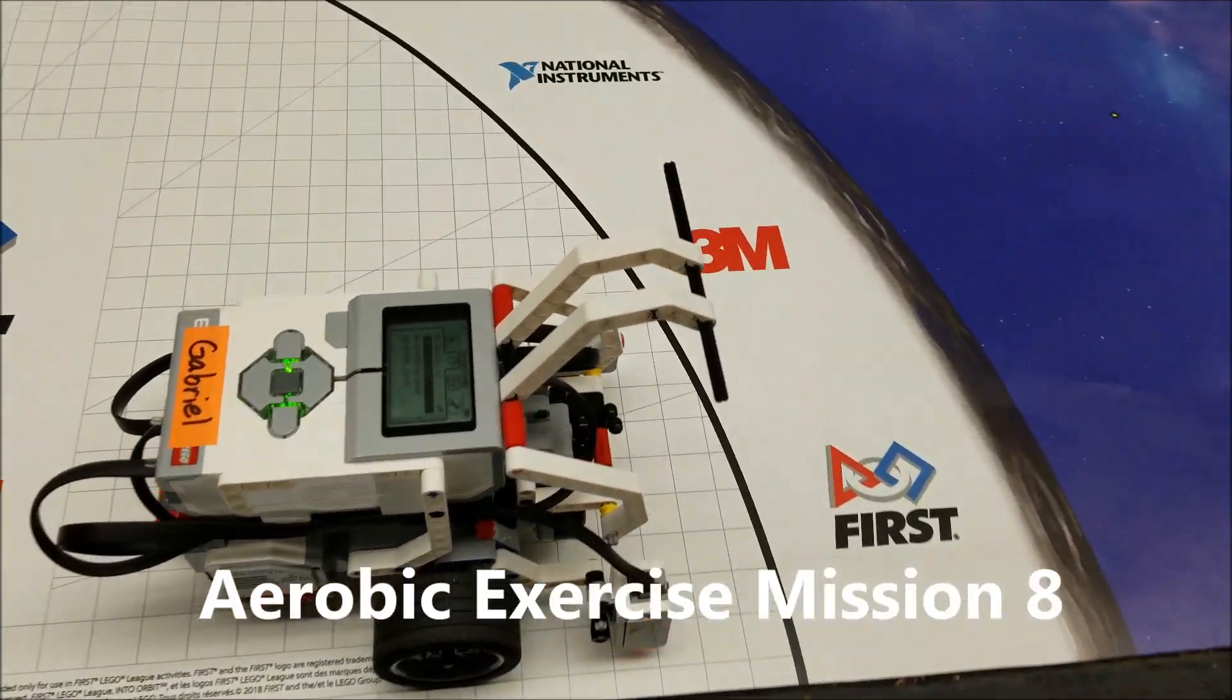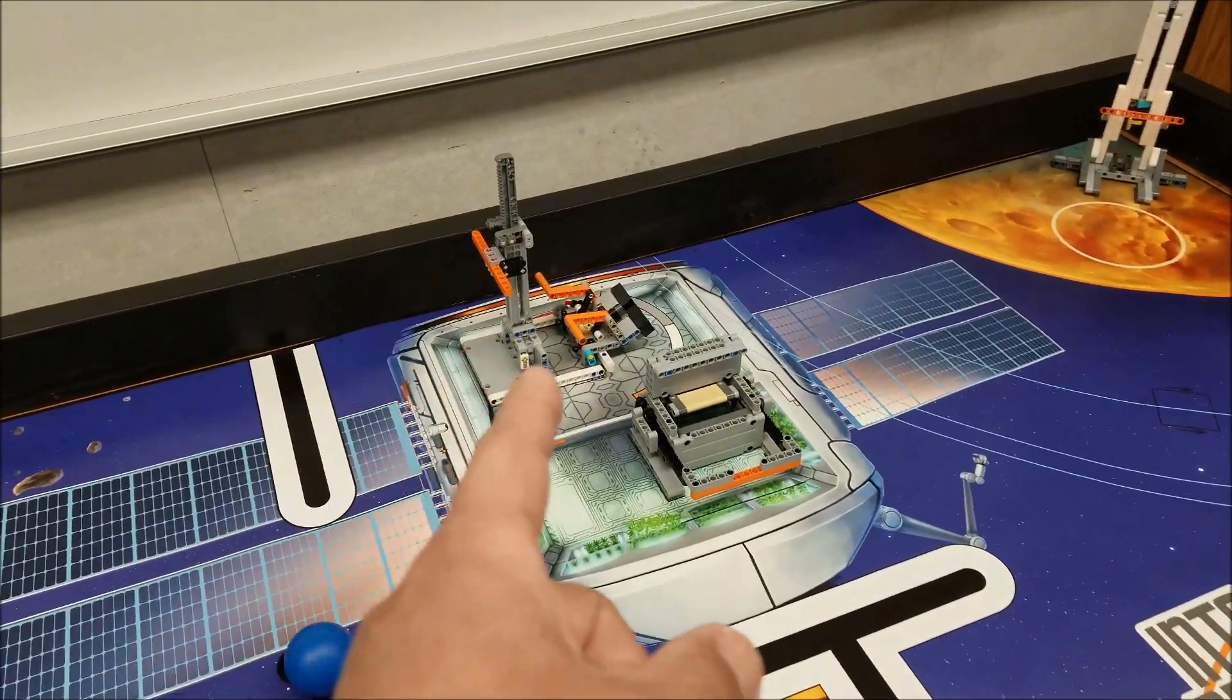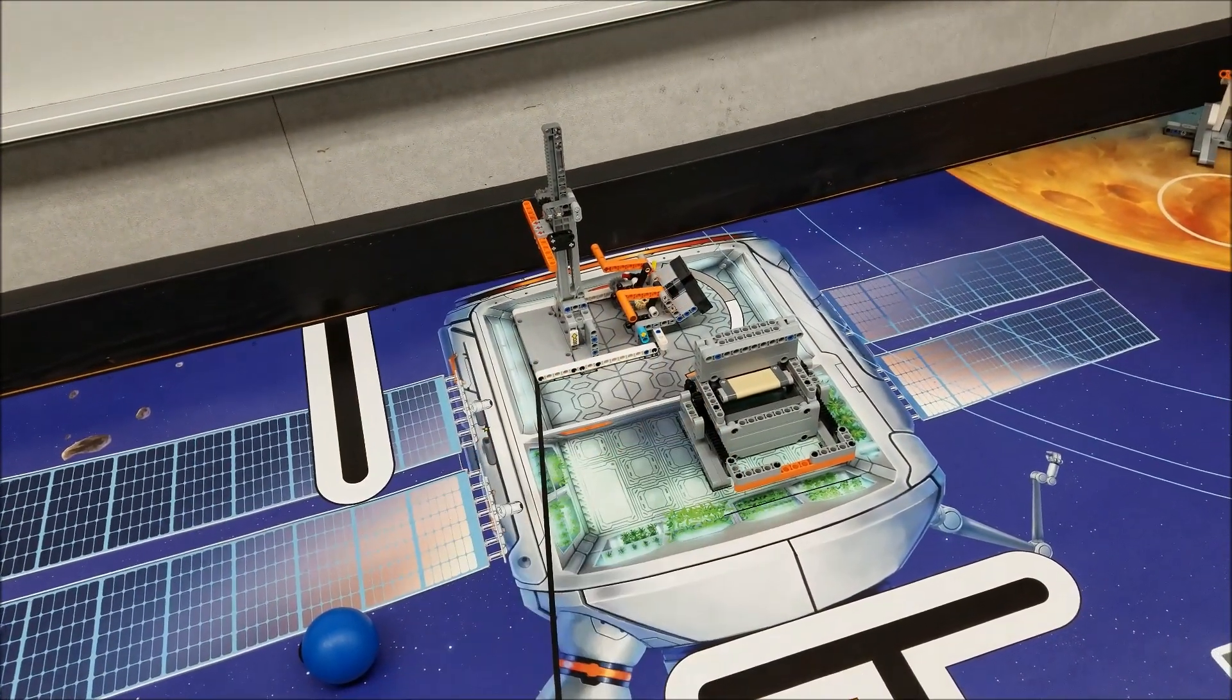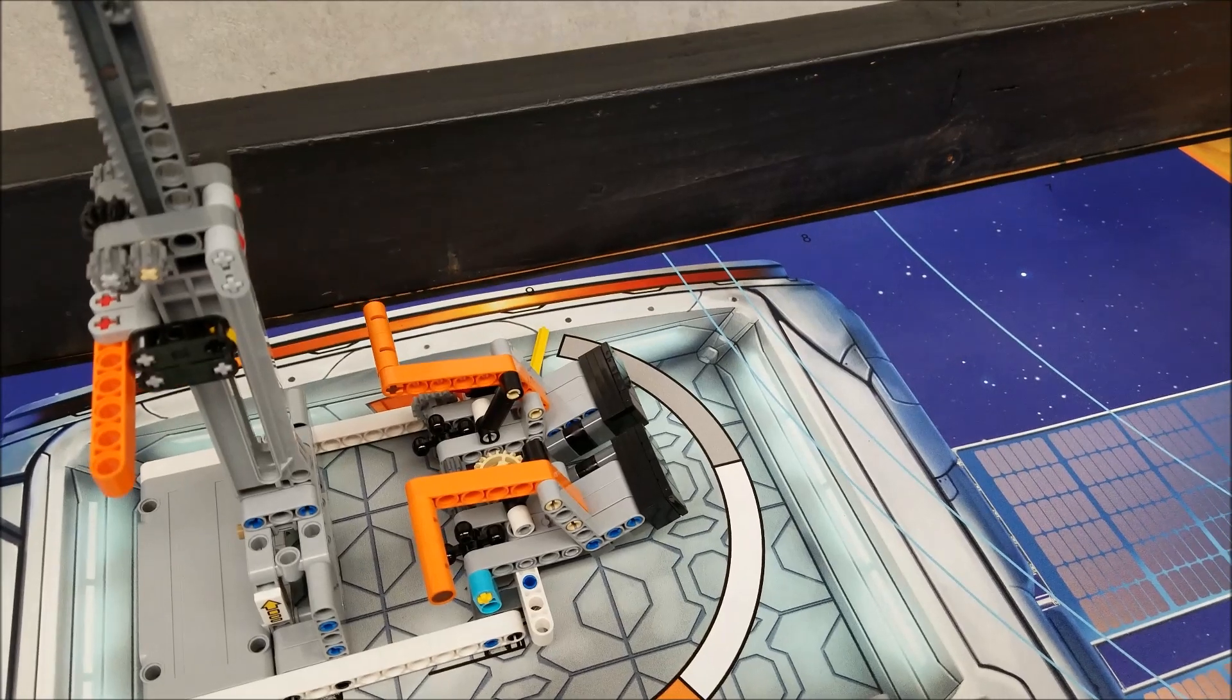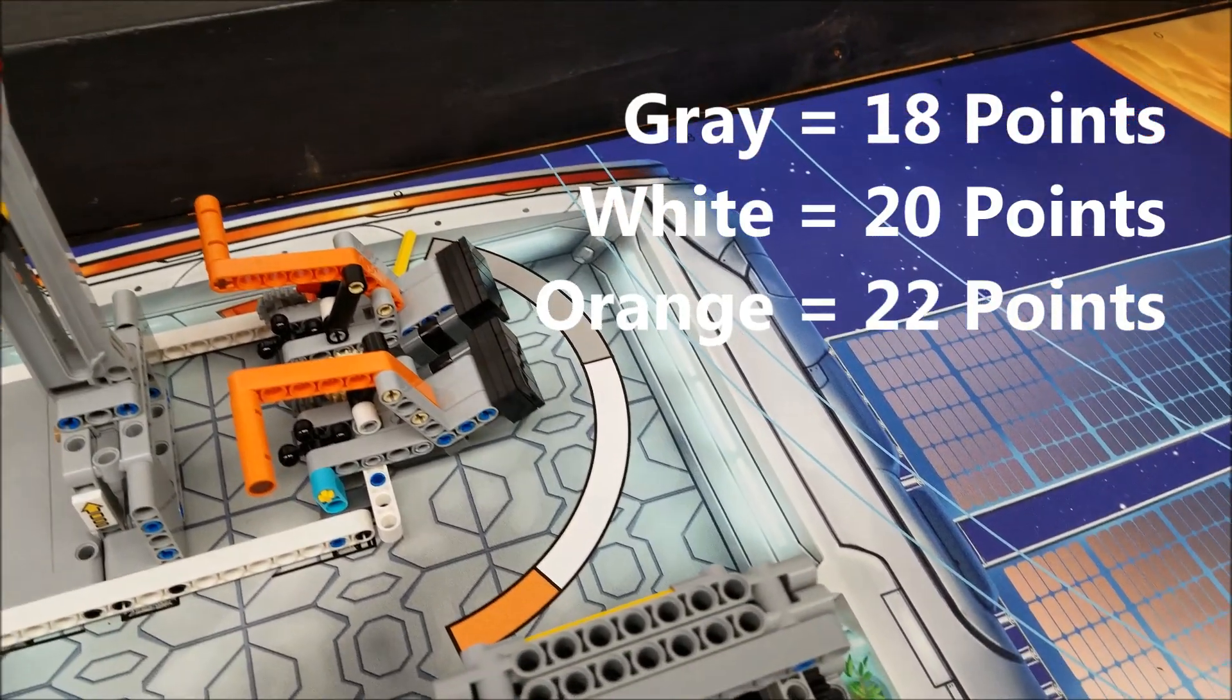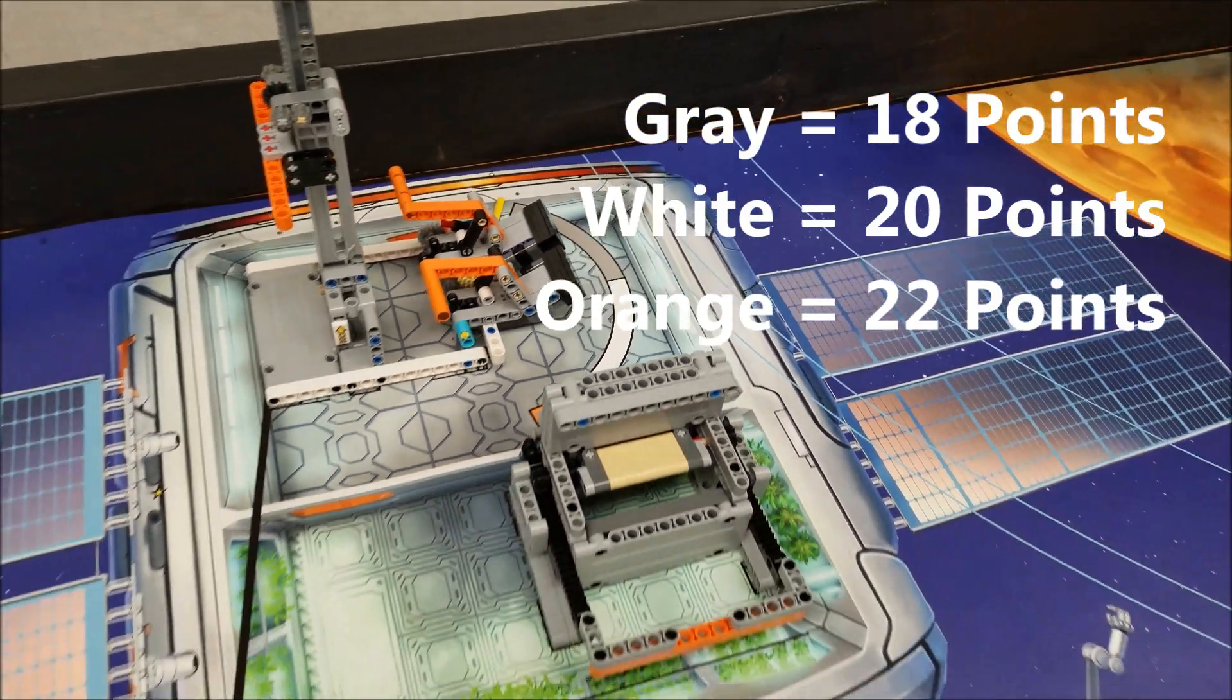I put a little bar here on this attachment to basically hit the right handle. What we're trying to do is push the handle down so that yellow bar over there - if you get into the gray, it's going to be 18 points, into the white section that's 20 points, and if it gets into the orange, it'll be worth 22 points.